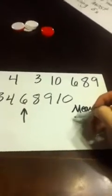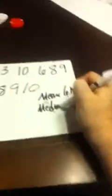I shouldn't write average, I should write mean. So, our mean is six point one four, our median is six, and our mode, which number occurred the most, would be three. So, our mode is three.